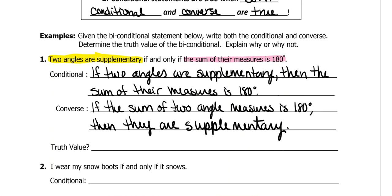For the truth value, we need to look at both. Remember, both the conditional and the converse have to be true for the biconditional to be true. The conditional says: if two angles are supplementary, then the sum of their measures is 180 — that's the definition of supplementary, so it's true. The converse says: if the sum of two angle measures is 180, then they are supplementary — that is also true. So the biconditional is true because both of its pieces are true.